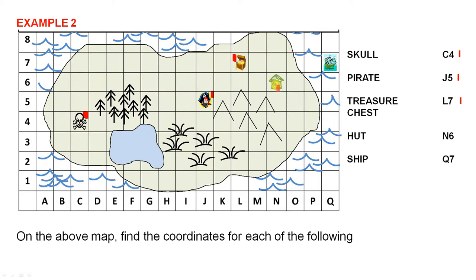The hut. There's the hut here. Start here. N6, there's N6. And finally the ship, which is there. Starts from the beginning. Q7. So each of these are - the C is a coordinate, the 4 is a coordinate. Put them together and that gives you the location in each case.